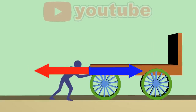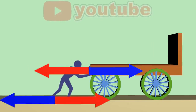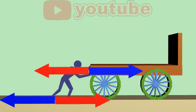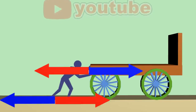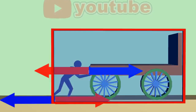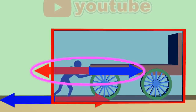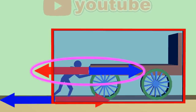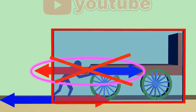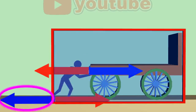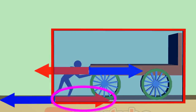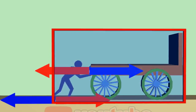We can use the connected objects concept mentioned earlier. Because the man and the chariot move together, we consider them as one object. The internal forces between them are equal and opposite and cancel each other out. The force applied to the ground is not applied to the connected set, so only the net external force acts on the connected set, causing it to move.